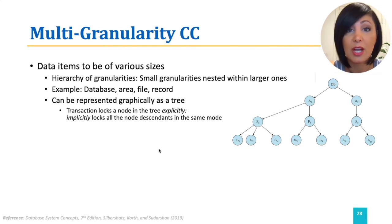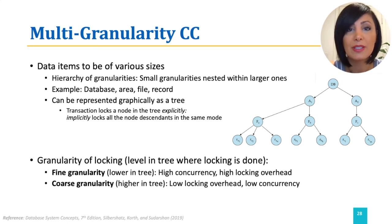The higher the concurrency needs of our system, the lower in the tree we should go towards the branches. The lower in the tree, the higher overhead we might accept as a tradeoff for this choice.